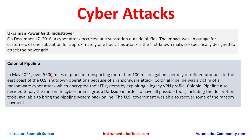Most recently, in May 2021, the Colonial Pipeline attack occurred. Over 5,500 miles of pipeline transporting more than 100 million gallons per day of refined product to the US East Coast shut down operations due to a ransomware attack. Colonial Pipeline was a victim of ransomware that encrypted their IT systems by exploiting a legacy VPN profile. Colonial Pipeline decided to pay the ransom to the cybercriminal group DarkSide in order to obtain the decryption tools and bring the pipeline back online. The US government was able to recover some of the ransom payment, but not fully.